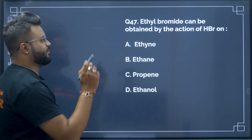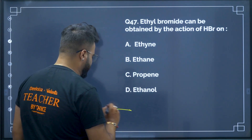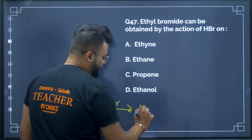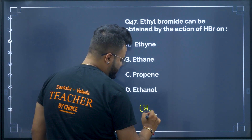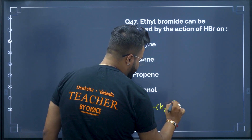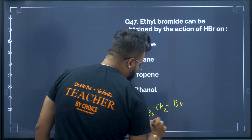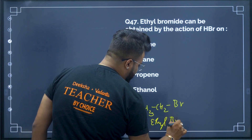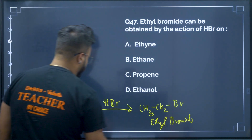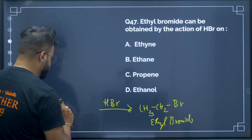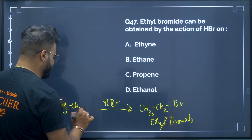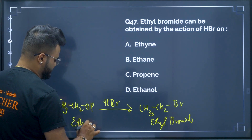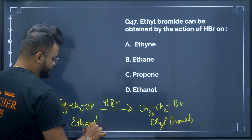Question number 47: ethyl bromide (CH3CH2Br) can be obtained from the action of HBr. We can obtain it when we use CH3CH2OH — that is ethanol — as the starting material.